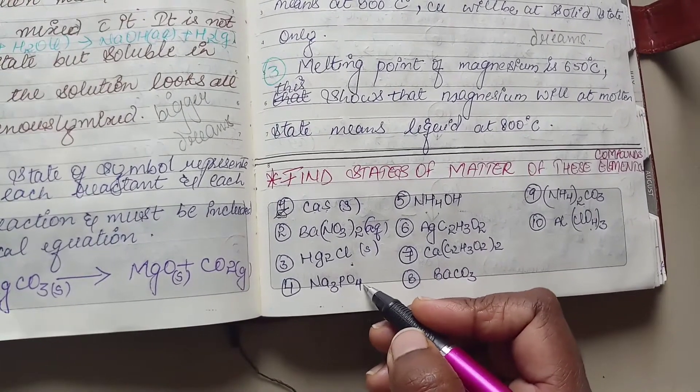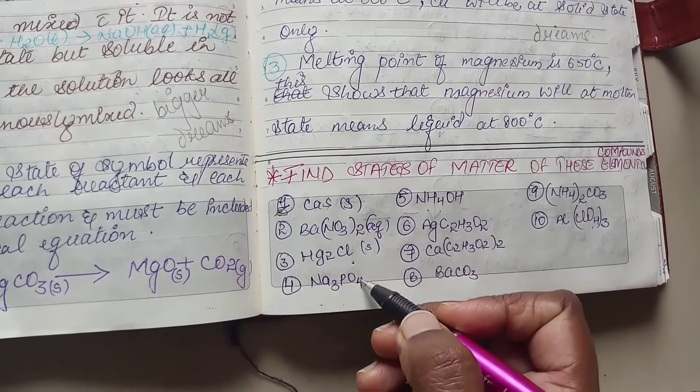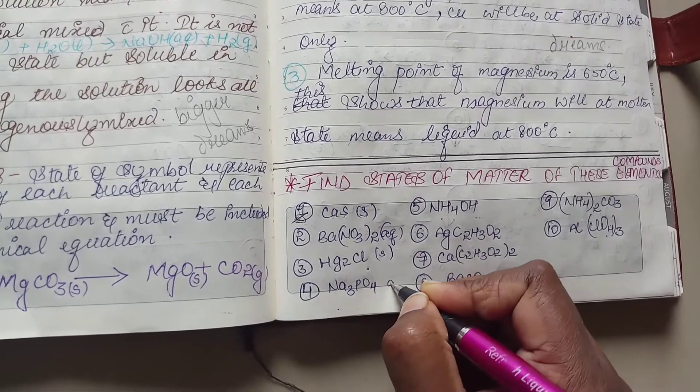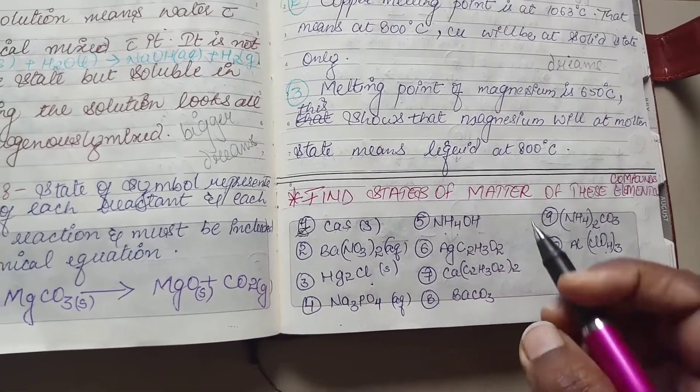This compound, PO4, is insoluble. But with group 1 elements which is Na, it becomes soluble. So that is the reason it is aqueous in nature.